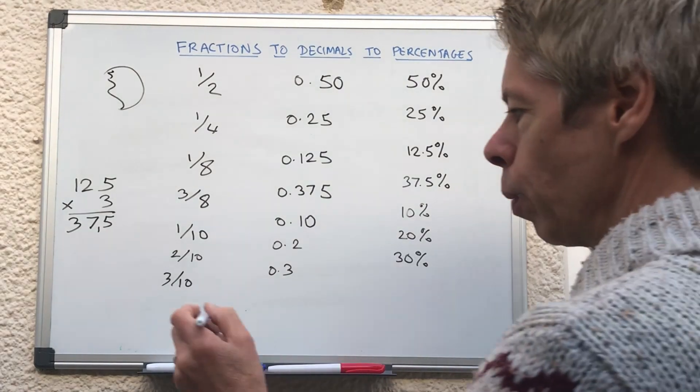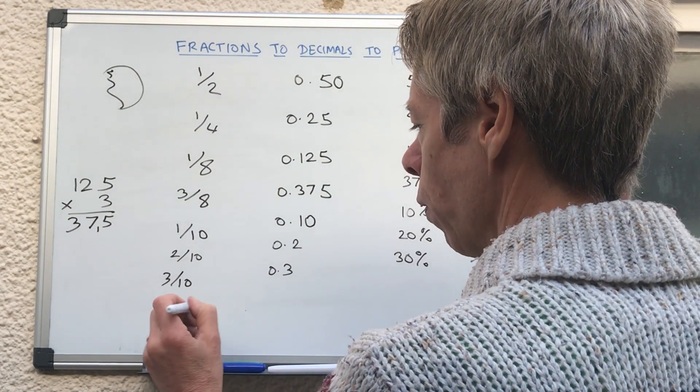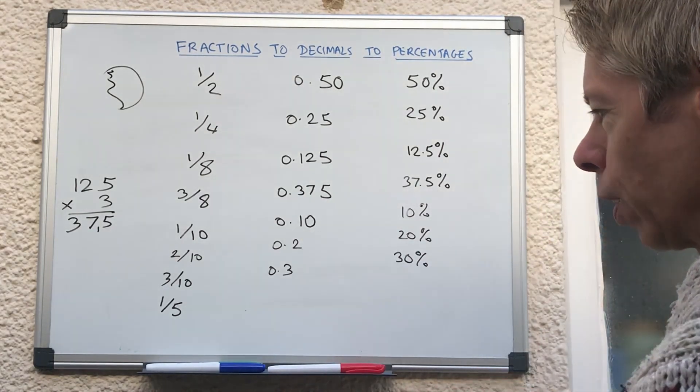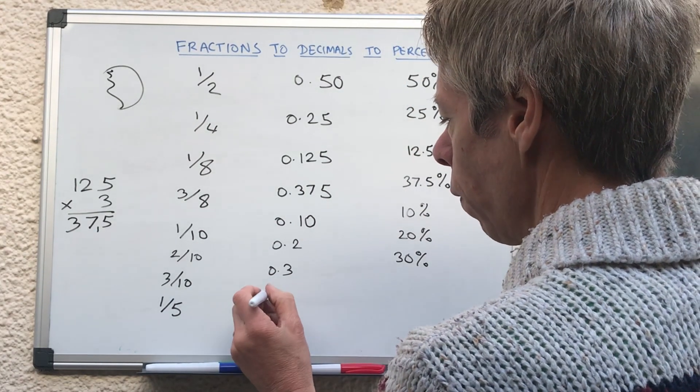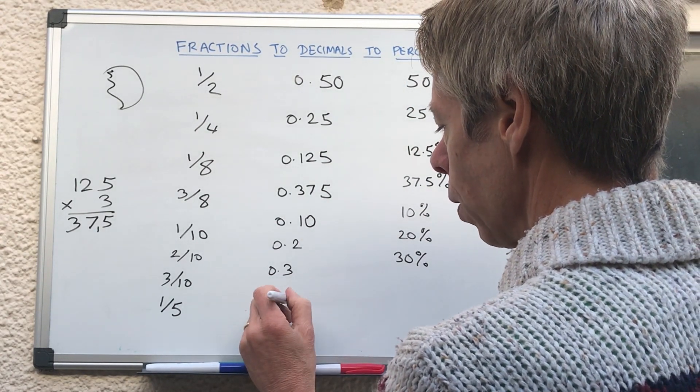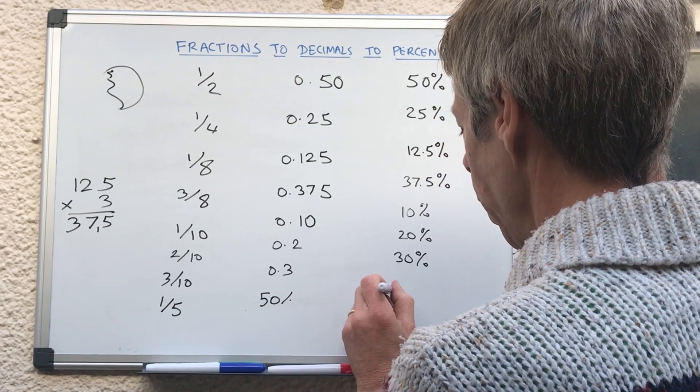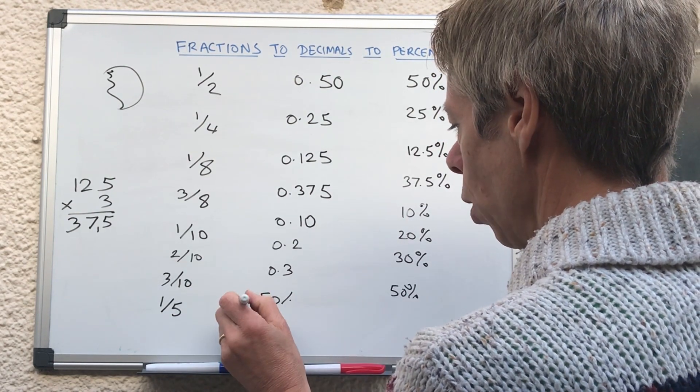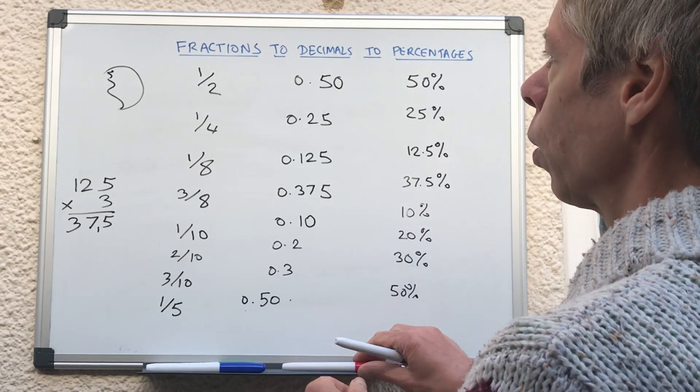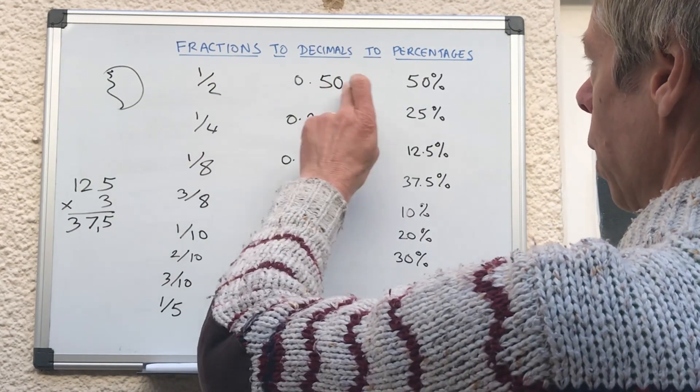Another common question you might get is, they might ask you, what is one fifth? Now a lot of people think, oh, one fifth, it must be 50%, or 50% would be over here. So this is 0.5, 50%. Obviously that's wrong, because one fifth and one half are not the same.